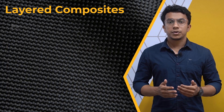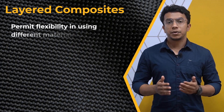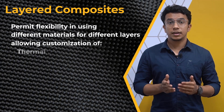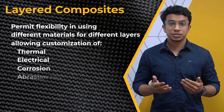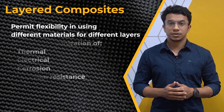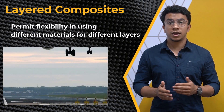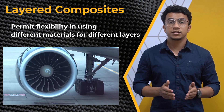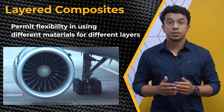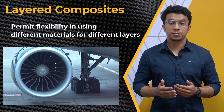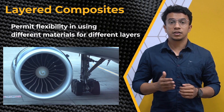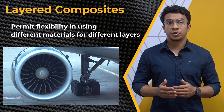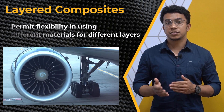Layered composites also permit flexibility in using different materials for different layers, allowing customization of thermal, electrical, corrosion, and abrasion resistance. For example, a turbine blade or airfoil that might be impacted by debris can have a layer of plastic-based protection, like a PU coating, added to protect the underlying carbon fiber. Or a part may incorporate layers of Kevlar to improve resistance to impact.